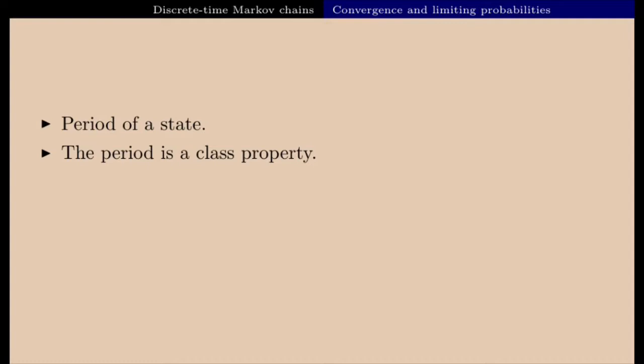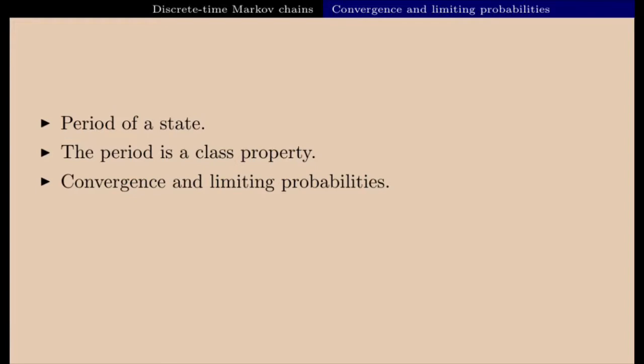Under the conditions that all states have period one and the process is irreducible, we will see that we have convergence of the multi-step transition probabilities, and we get what we call the limiting probabilities. The proof relies on a beautiful argument in probability called the coupling argument, due to Doeblin.